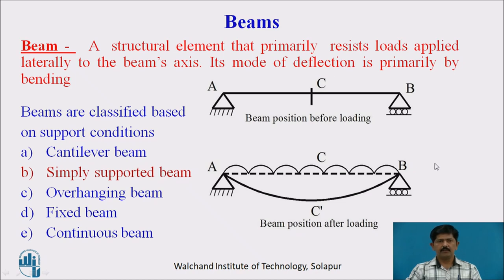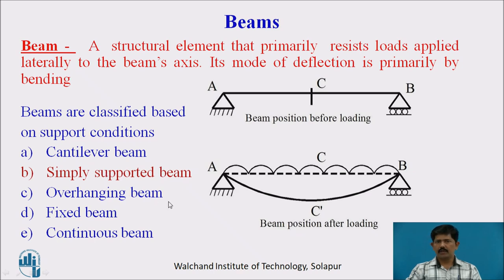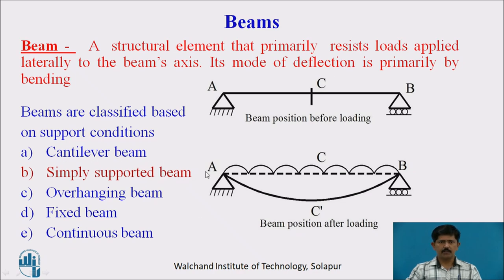Beams are classified depending upon the support conditions. They are: cantilever beam, simply supported beam, overhanging beam, fixed beam, and continuous beam. We are dealing with the simply supported beam.